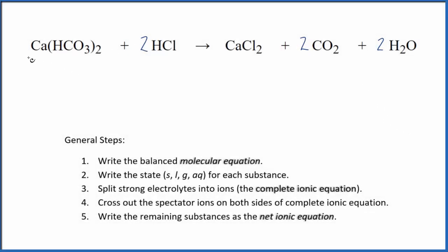Let's balance the net ionic equation for Ca(HCO3)2 plus HCl. This is calcium bicarbonate, sometimes called calcium hydrogen carbonate, and then we have hydrochloric acid here.